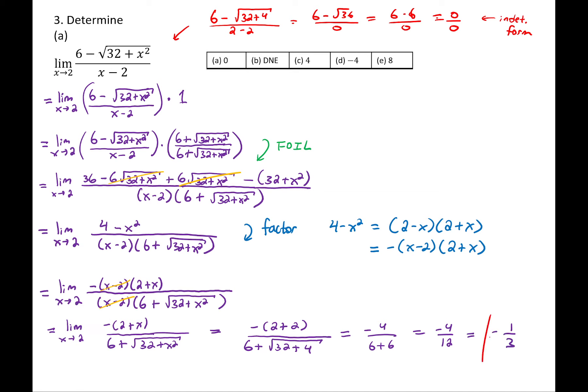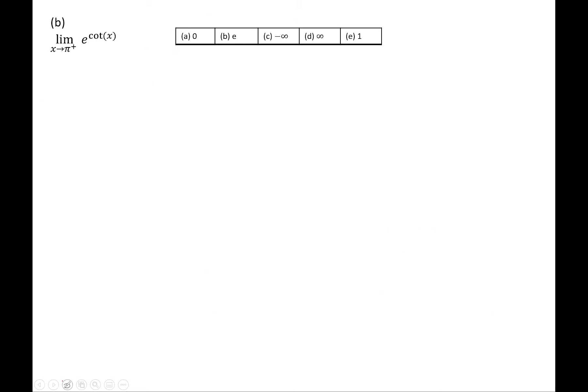Part B for question 3: another limit. Limit as x approaches π from the right of e to the power of cot(x). I'm going to break this down into pieces. First, I'll find out what happens to cot(x) when x approaches π from the right: limit as x→π⁺ of cot(x). Whatever answer we get, we'll plug that in as the exponent on base e.